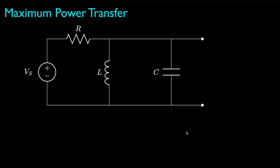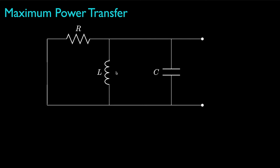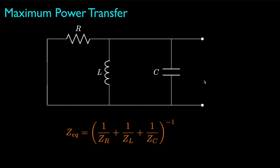As an example, let's consider a circuit with an AC voltage source, one resistor, one inductor, and one capacitor connected in a particular configuration, and determine the load impedance that will maximize the power transferred to it. To do that, we'll convert this circuit to its Thevenin equivalent. For the equivalent impedance, we turn off the source and determine the equivalent impedance for the three elements. Because they are all in parallel relative to the load terminals, we use the rule for combining elements in parallel, after converting each element to its impedance at the operating frequency.